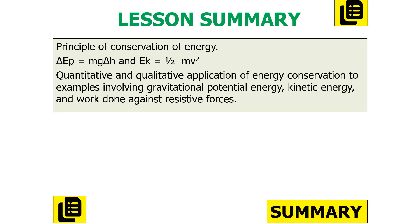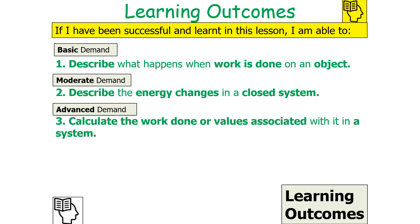To summarise today's lesson: we've looked at the principle of conservation of energy, the equation for gravitational potential energy (GPE = mgΔh), and the equation for kinetic energy (Ek = ½mv²). We've also looked at quantitative and qualitative applications of energy conservation, including gravitational potential energy, kinetic energy, and work done against resistive forces. If successful, we should be able to describe what happens when work is done on an object, describe energy changes in a closed system, and calculate work done or associated values in a system.